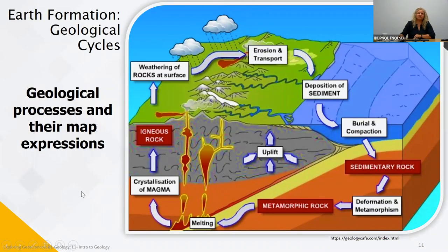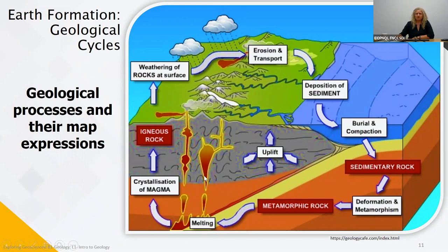The next topic is the geological cycle — geological processes and their expressions. Going clockwise, the major events forming the geological cycle are: erosion and transport, followed by deposition of sediments, burial and compaction creating sedimentary rocks, then deformation and metamorphism transforming them into metamorphic rocks. Going into magma chambers, melting and rock infusion occurs. Volcanoes push material upward, creating mountain ranges, and crystallization of magma forms igneous rocks. The cycle finishes with weathering at the surface, rocks being eroded and transported by wind, water, and gravity.